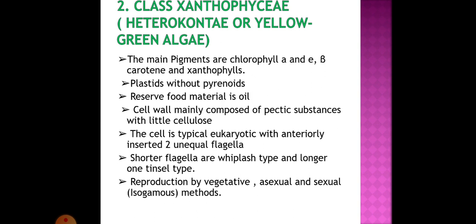Moving on to the next class: Xanthophyceae, also known as Heterokontae or Yellow Green Algae. The main pigments are chlorophyll A and E, beta-carotene, and xanthophylls. Plastids are without pyrenoids. Reserve food material is oil. The cell wall is mainly composed of pectic substances with little cellulose. The cell is typically eukaryotic with anteriorly inserted two unequal flagella — shorter flagella are whiplash type and longer ones are tinsel type. Reproduction is by vegetative, asexual, and sexual methods, with isogamous sexual reproduction observed.